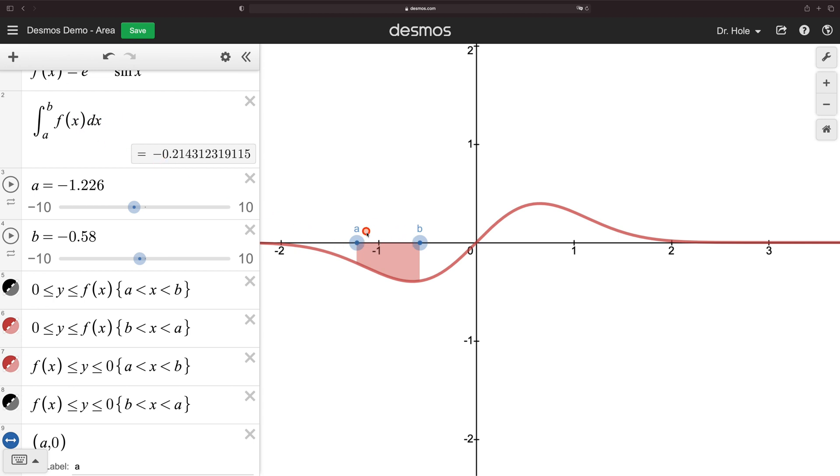Now, swap the a and the b. So let's bring the a to the other side of b. We're still shading below the x-axis and above the curve. And we've coded it so that it shades positive. And indeed, we look at our definite integral, and it's positive.